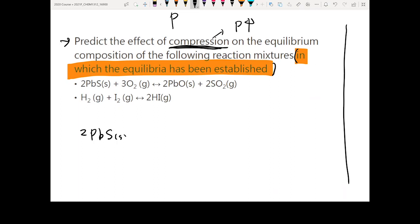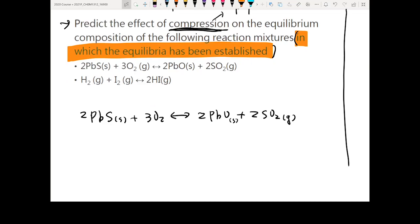2PbS in the solid form plus 3O2 gives you 2PbO plus 2SO2 in the gas form. This is the solid form.